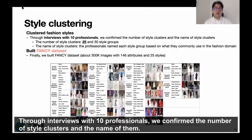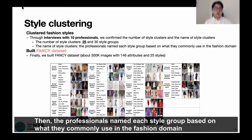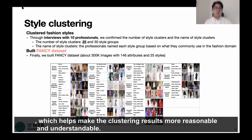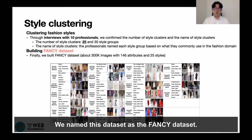Through interviews with 10 professionals, we confirmed the number and names of style clusters. The professionals mentioned that between 25 and 30 is reasonable as a number of style clusters. The professionals named each style group based on what they commonly use in the fashion domain, which helped make the clustering results more reasonable and understandable. Finally, we built the large-scale fashion style dataset, which includes above 300K images with 146 attributes and 25 style groups. We named this dataset the FANCY dataset.